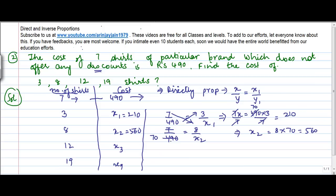Okay, so 7 by 490 can also be written as 1 upon 70 is equal to 12 upon x3. Cross multiplying we get x3 is equal to 840.